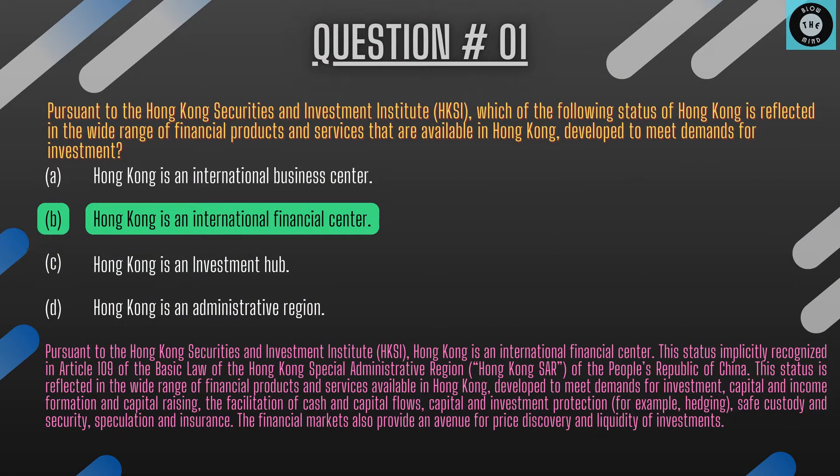The explanation: pursuant to the Hong Kong Securities and Investment Institute, Hong Kong is an international financial center. This status is implicitly recognized in Article 109 of the Basic Law of the Hong Kong Special Administrative Region of the People's Republic of China. This status is reflected in the wide range of financial products and services available in Hong Kong, developed to meet demands for investment, capital and income formation and capital raising, the facilitation of cash and capital flows, capital and investment protection, safe custody and security, speculation and insurance. The financial markets also provide an avenue for price discovery and liquidity of investments.